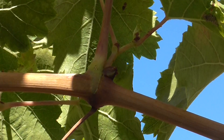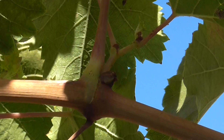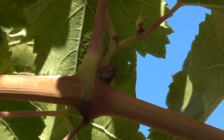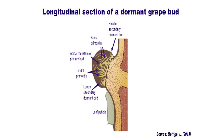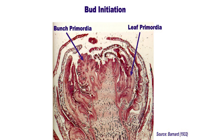The grapevine bud is located in the axle of where the petiole is connected to the main shoot. This compound bud contains a primary bud and two smaller secondary buds. Under normal conditions, the primary bud emerges in spring and is typically the most fruitful of the three.